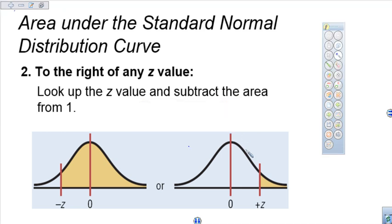All right, so let's take a look at what it would be like if we had a standard normal distribution curve and we had a given z-score, but we wanted to find the area to the right.